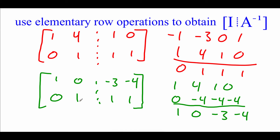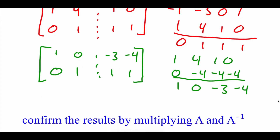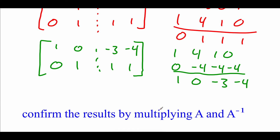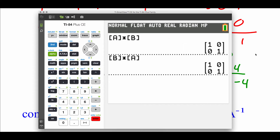By getting this into reduced row echelon form, we now have the identity matrix on the left-hand side. The 2x2 matrix on the right-hand side represents the inverse of matrix A. To confirm, we take our original matrix A times our supposed inverse, doing that on the calculator. I already had matrix A typed in, took that inverse and typed it in for matrix B, then checked multiplication in both orders — A times B and B times A. Both times I got an identity matrix, so yes, these two matrices are inverses of each other.